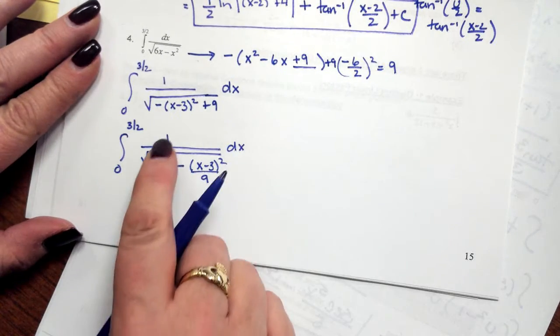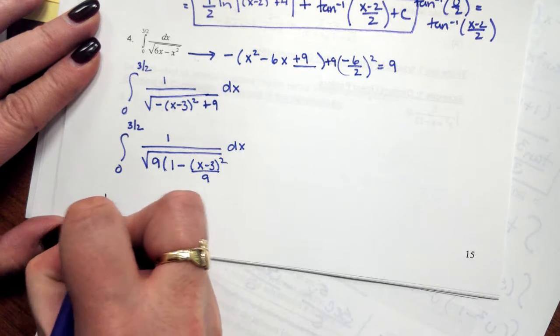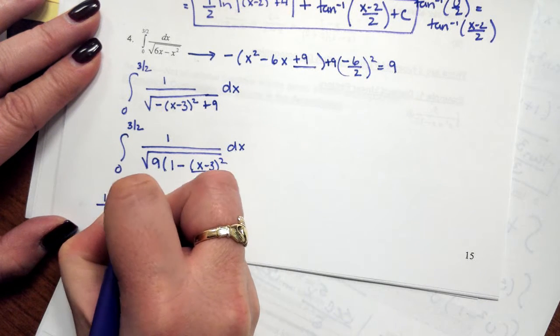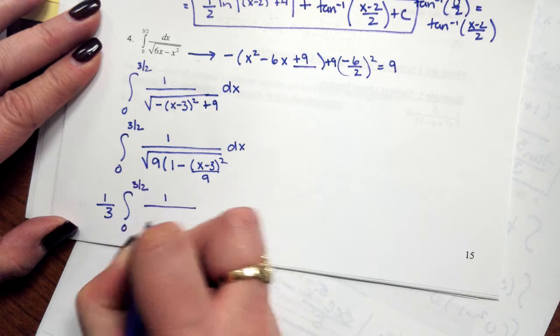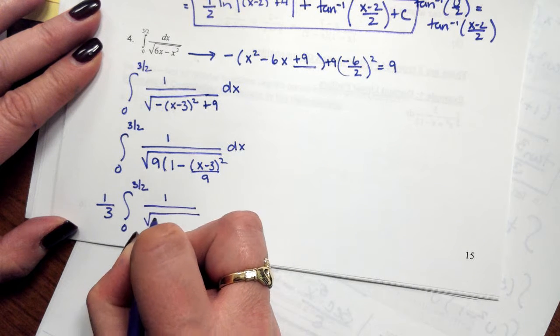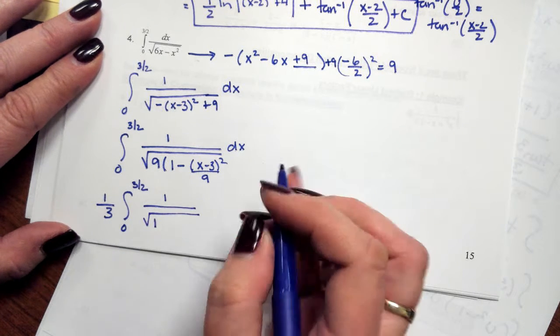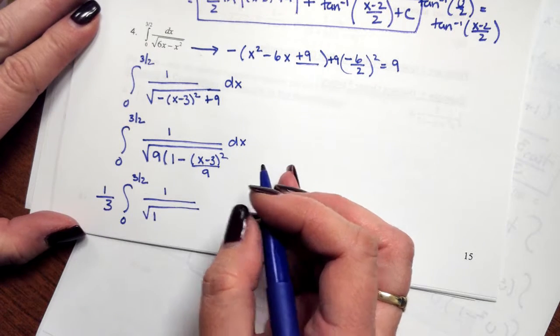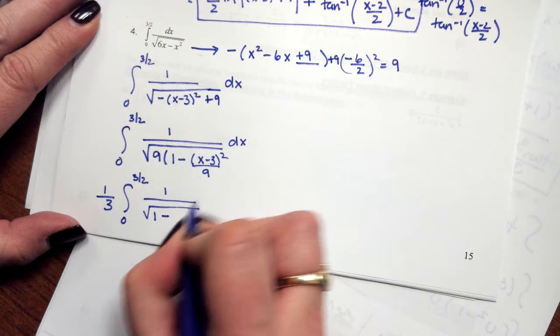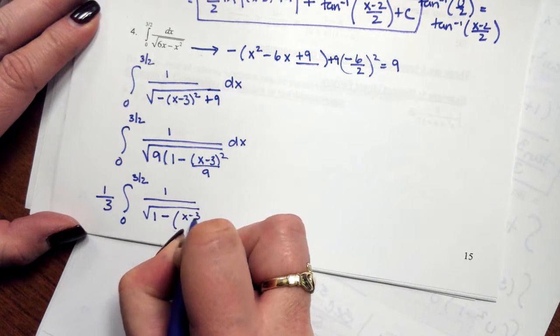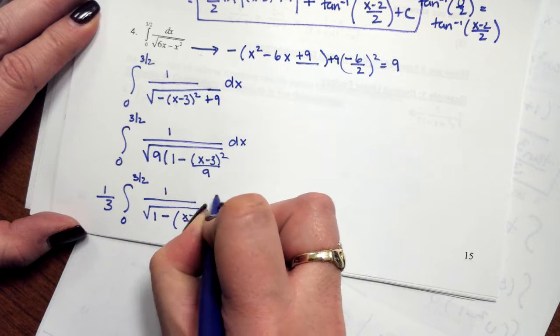So the constant I can pull out is 1 over the square root of 9, which is a 1 third. So I have 1 over the square root of 1 minus, and I'm going to rewrite this fraction as an x minus 3 over 3 to the second power dx.